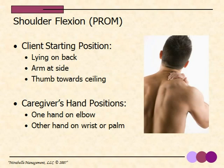The first stretch is shoulder flexion. The client is lying on their back, their arm is at their side, and their thumb is pointing towards the ceiling. The thumb pointing towards the ceiling is the most important aspect of the stretch — it will stop any pinching of the shoulder joint when the arm is moved over the client's head. It is best if the caregiver has one hand on the elbow of the client and the other on the client's hand or wrist.